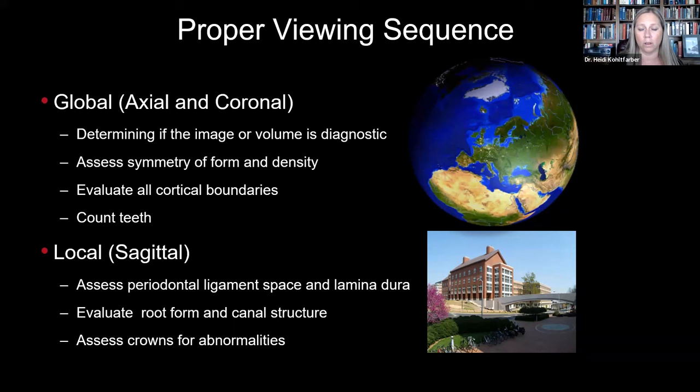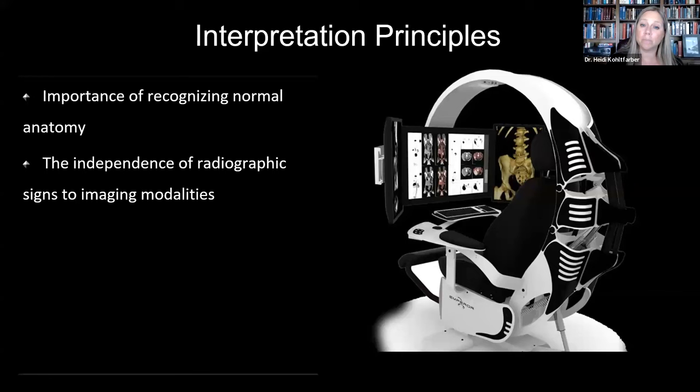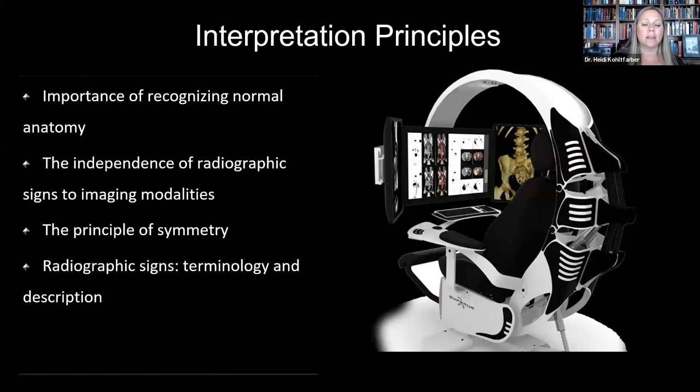With the sagittal, you can't see the other side, so you can't use symmetry. It's easier to use the axial and coronal sections for a global approach. So we're looking at those interpretation principles: the importance of recognizing normal anatomy, independence of radiographic signs to imaging modalities, the principle of symmetry, and then looking at those radiographic signs. We have lectures discussing terminology and description for various pathologies — this is a brief overview, and then we're going to jump into cases today.